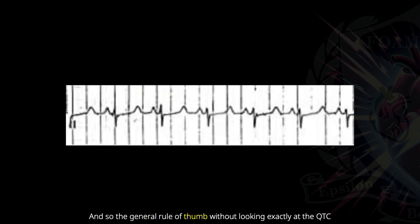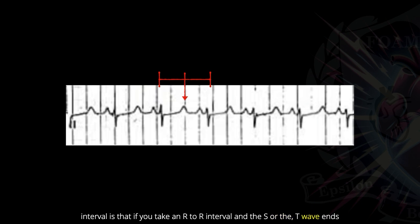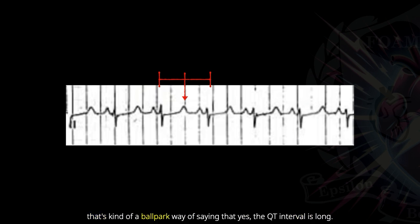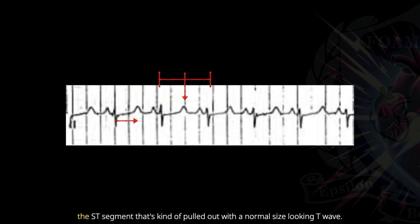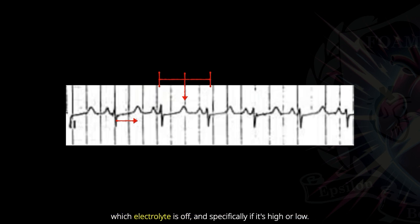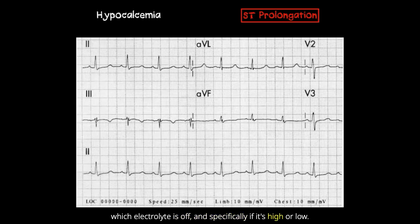The general rule of thumb, without looking exactly at the QTc interval, is that if you take an R-to-R interval and the T wave ends up being at or beyond the halfway point between the R-to-R intervals, that's a ballpark way of saying the QT interval is long. What I want you to notice about this specific portion is that it's actually the ST segment that's pulled out with a normal-sized-looking T wave. This is important because it's going to delineate exactly which electrolyte is off and specifically whether it's high or low.